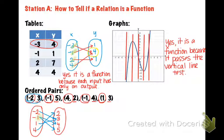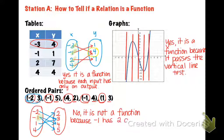this one is not good because negative one has two arrows that come off of it. So the answer this time would be no, it is not a function because negative one has two different outputs. And that's how we decide if something is a function.